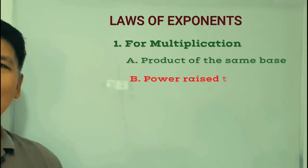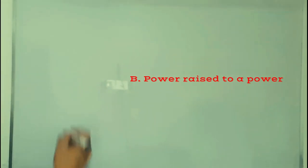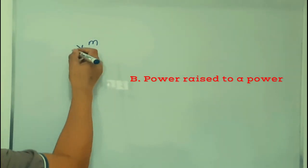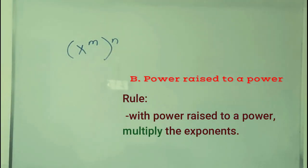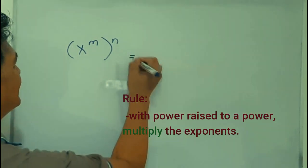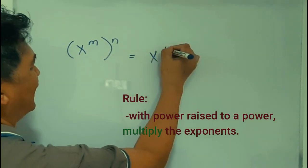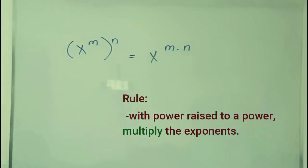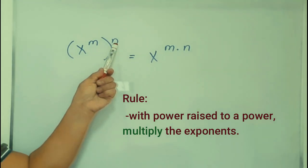Now let's take the second law under the law of exponent for multiplication: power raised to a power. That means you have x raised to m, and that whole expression is raised to n. The rule is x raised to m times n — you multiply the exponents. The difference from Rule 1 is that in the product of the same base you add the exponents, but here with a power raised to a power you multiply the exponents.